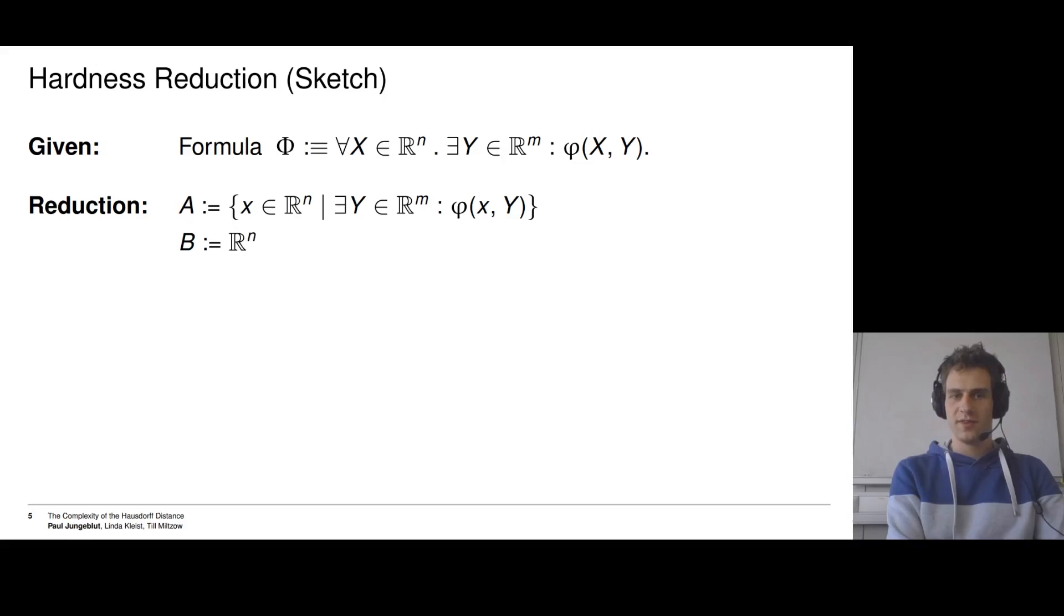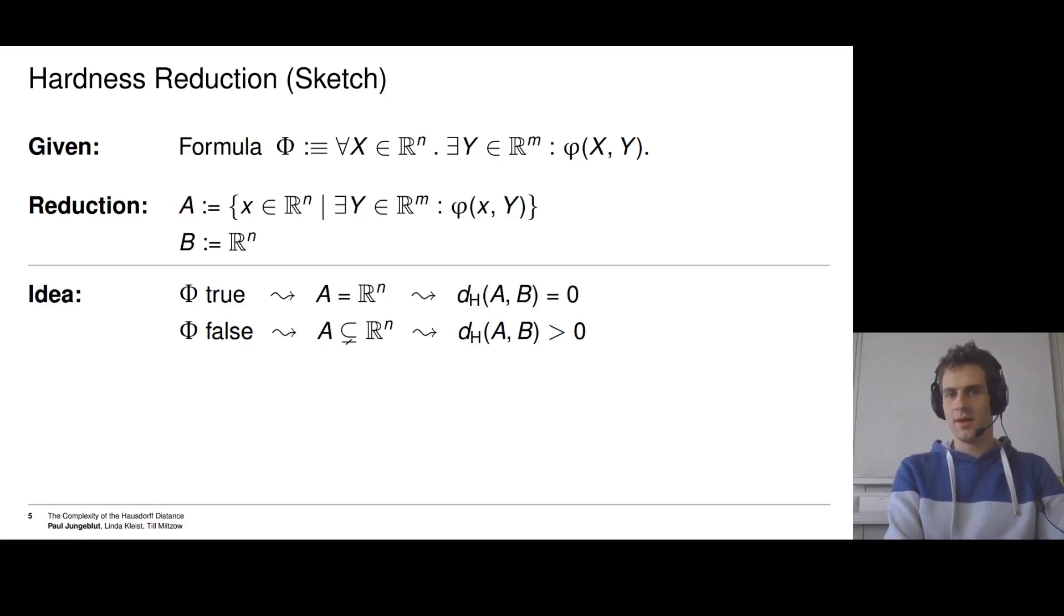For A, we simply choose the set to contain all x in ℝⁿ such that there is a y making φ(x, y) true. And B is ℝⁿ, so the whole space. So what is the idea behind this reduction? If Φ is a true formula, then for all x there is a y. Thus, set A contains all x in ℝⁿ. Basically, A is ℝⁿ. Thus, A and B are the same set, and their Hausdorff distance is 0.